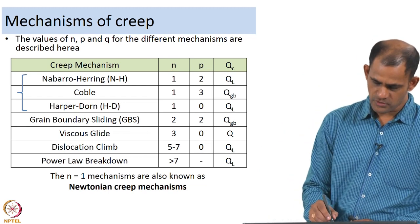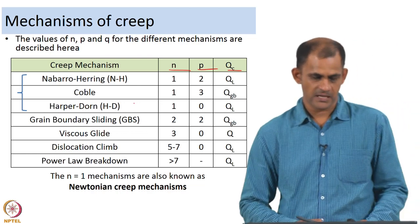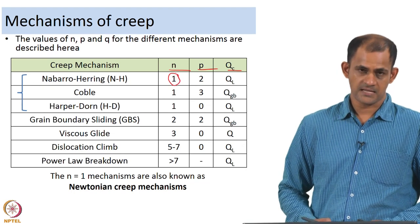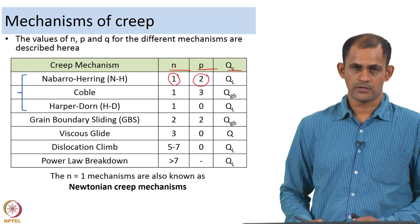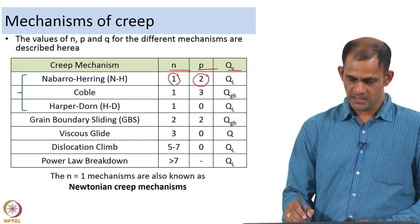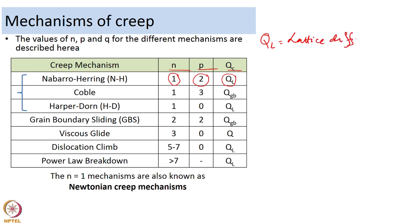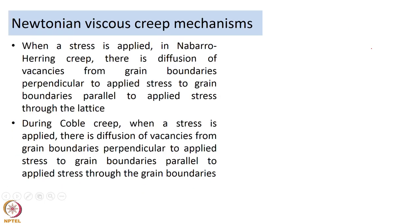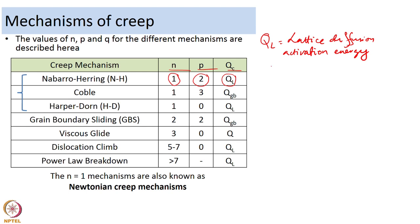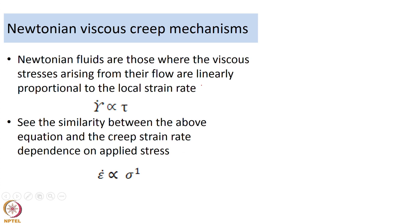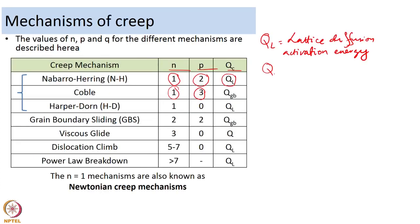The values of N, P, and Q are different for different mechanisms. For Nabarro-Herring, the stress exponent N equals 1, the grain size exponent P equals 2, and the activation energy Qc equals QL, the lattice diffusion activation energy. For Coble creep, N is again 1 but P equals 3, and the activation energy Qc equals QGB, the grain boundary diffusion activation energy.